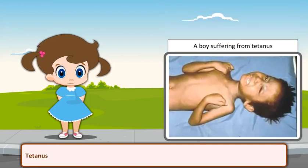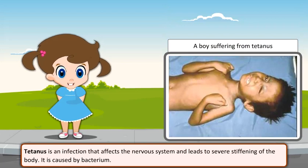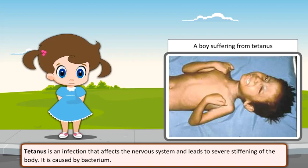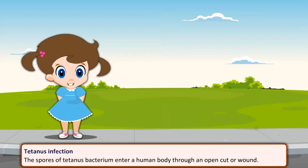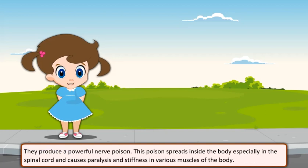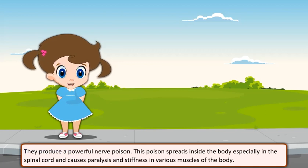Tetanus is an infection that affects the nervous system and leads to severe stiffening of the body. It is caused by bacterium. The spores of tetanus bacterium enter a human body through an open cut or wound. They produce a powerful nerve poison that spreads inside the body, especially in the spinal cord, and causes paralysis and stiffness in various muscles of the body.